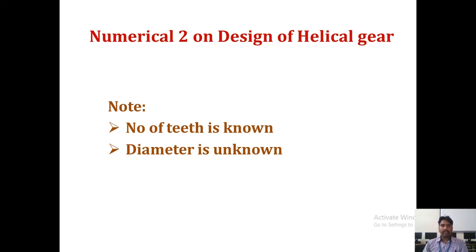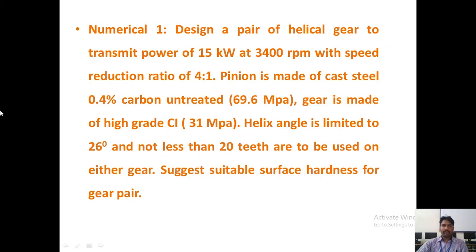Welcome to Numerical 2 on Design of Helical Gear. This is a Type 2 problem where the number of teeth is known and the diameter is unknown. I have already explained Type 1 where diameter is known and number of teeth is unknown.